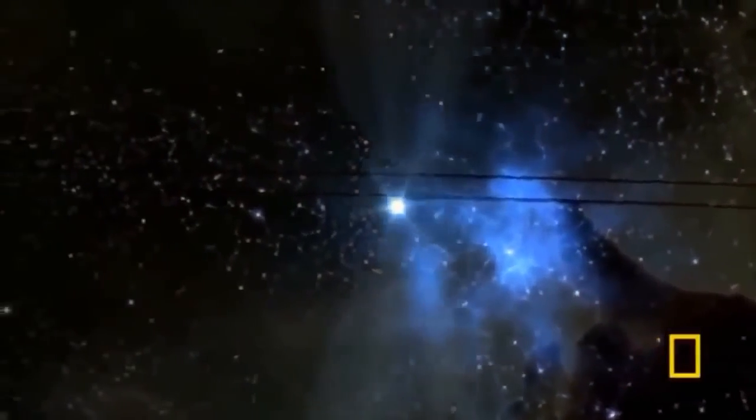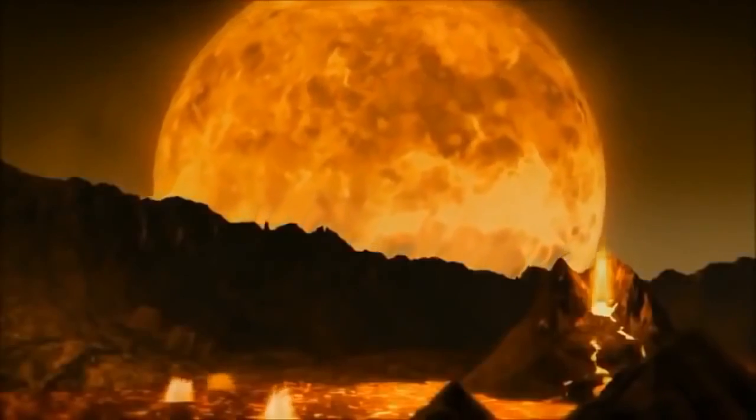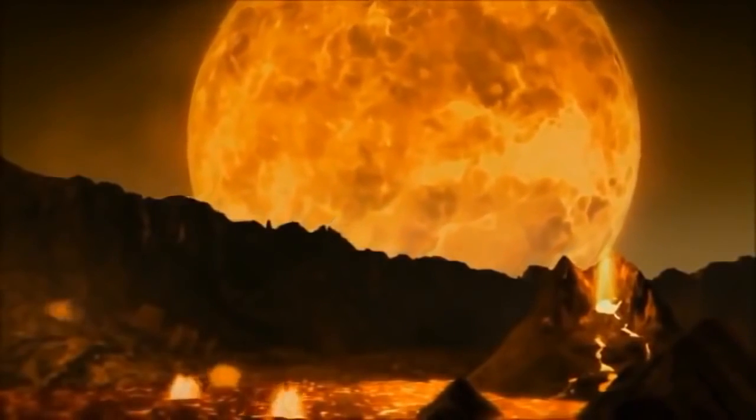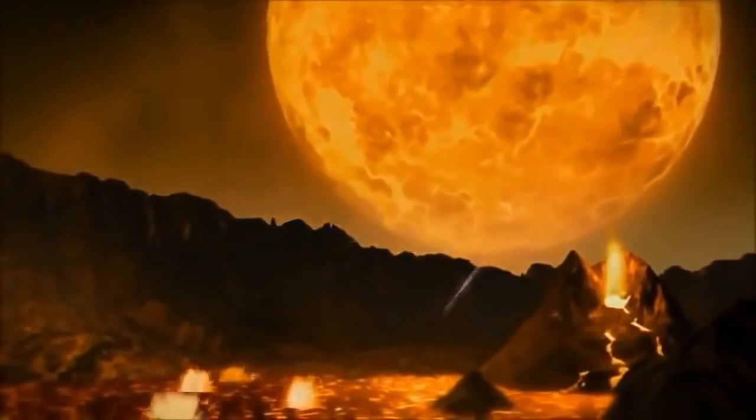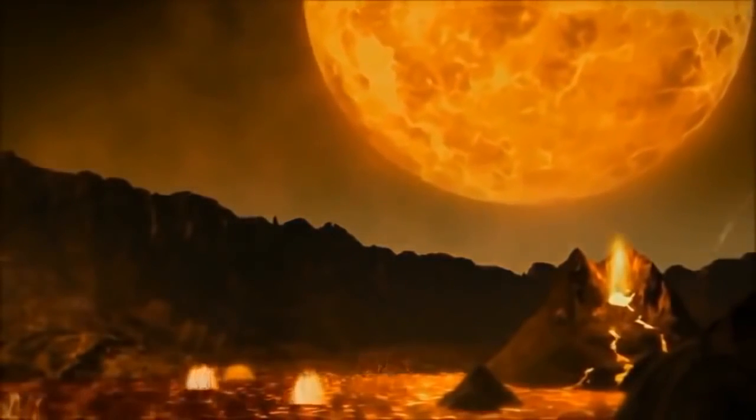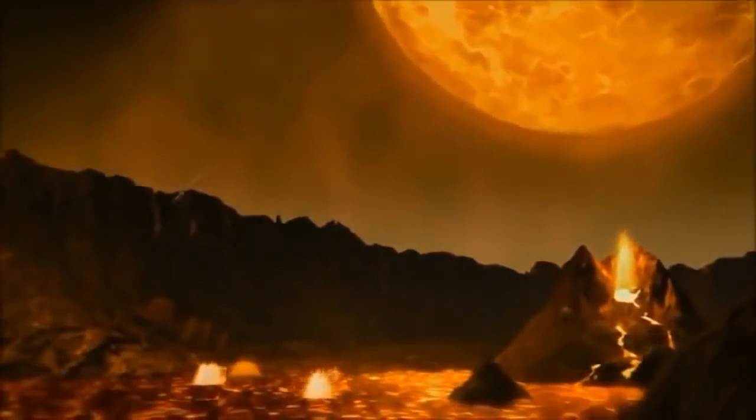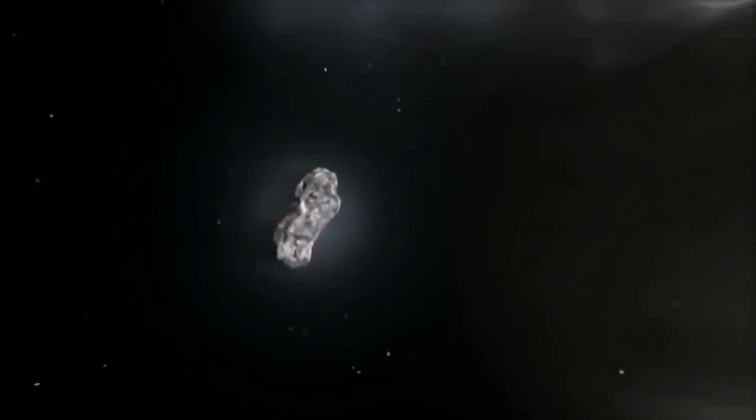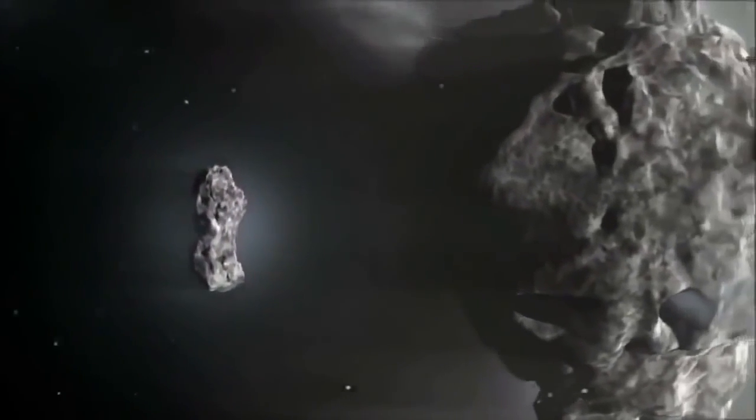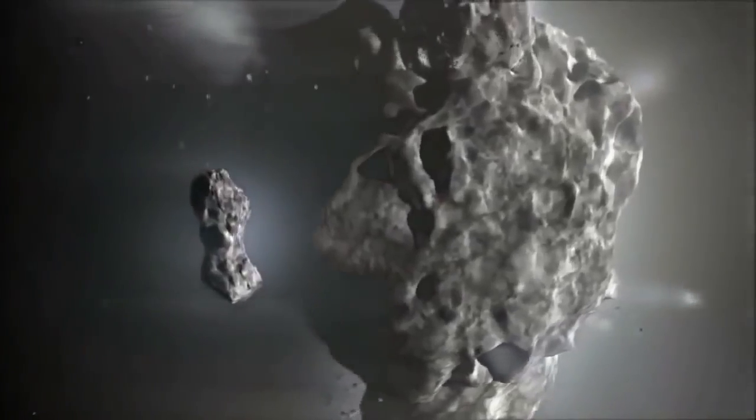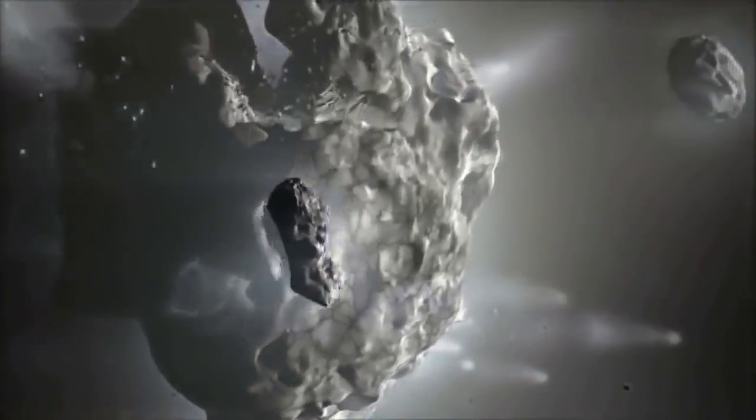The debris field from the collision coalesces and forms our Moon. It is a new beginning for our planet. Collisions are part of the birth process for planetary systems. Building a terrestrial planet is probably all about colliding pieces of rock together. And all across the galaxy, colliding pieces of rock are forming terrestrial worlds that defy the imagination.